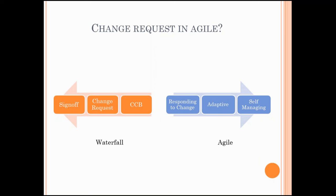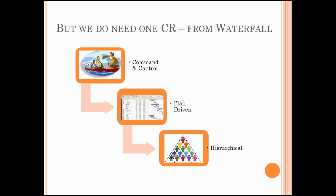We don't want a lot of changes to happen, because in waterfall we go with a plan-driven approach, where we have planned things based on the requirements in hand. Whereas agile is going in another direction. The Agile Manifesto says we are open to responding to change, we are highly adaptive, and we would like to have teams working as self-managing. So in this context, how come we are talking about change request in an agile context? But it is relevant — we definitely need one change request, a very serious one, and that is for shifting from the waterfall mindset to the agile mindset.